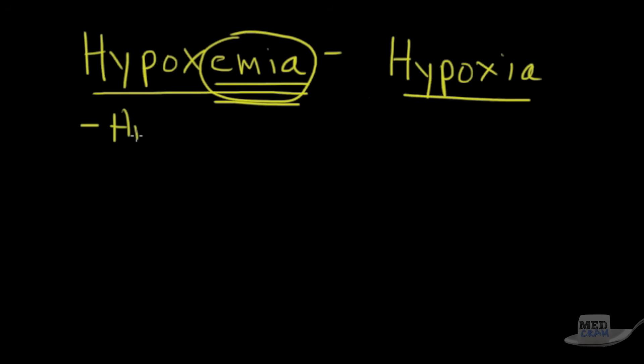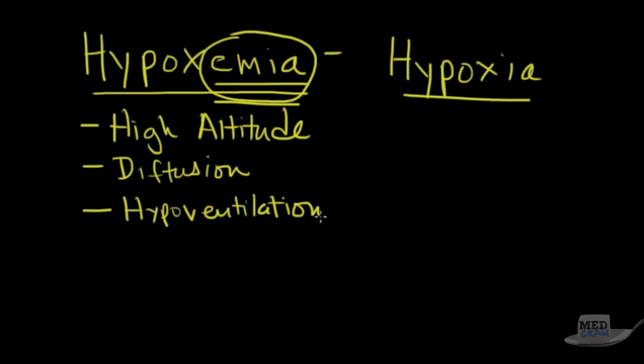So high altitude is one of those reasons. We'll go over that today. The other one is diffusion. The next one is hypoventilation. Next is shunting. And then finally, we're going to go over V/Q mismatch. And this will take a number of lectures to go over, but I want to talk about where we're going to go with this.